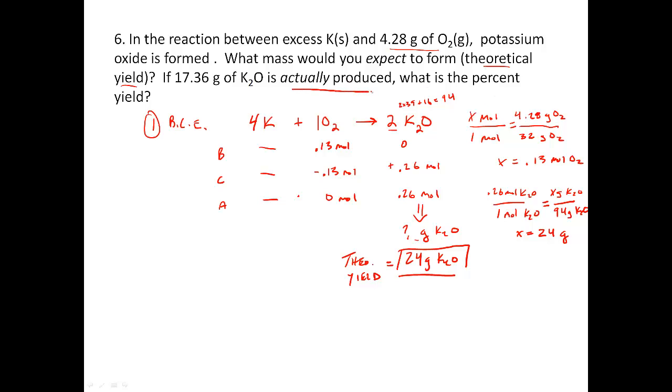Now, if we actually produce 17.36 grams of K2O, what's the percent yield? Well, percent yield equals actual yield over theoretical times 100. Just plug it in. Actual is 17.36 grams divided by 24 grams. Don't forget to multiply by 100 here. Theoretical yield is 72 percent.